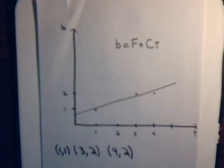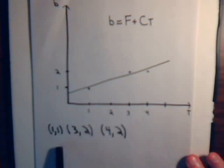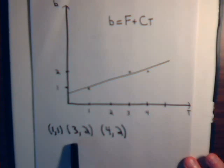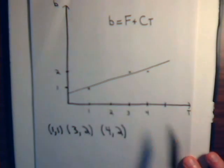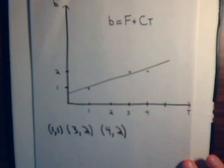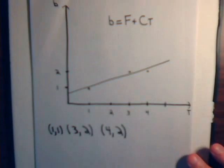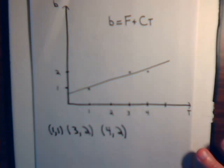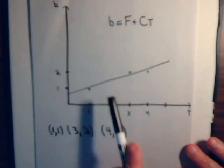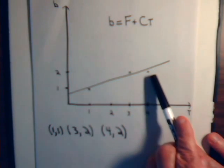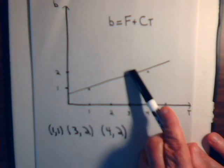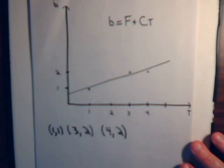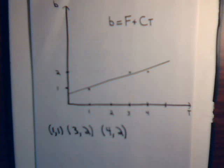For our problem, let's say that we have three data points: (1,1), (3,2), and (4,2). Obviously there's no single straight line that is going to go through all three points. So we're trying to construct a line that goes in between the three points and gives the least amount of error. The error is the distance from our actual data point to the line, and that is minimized for all three of them using the method of least squares.